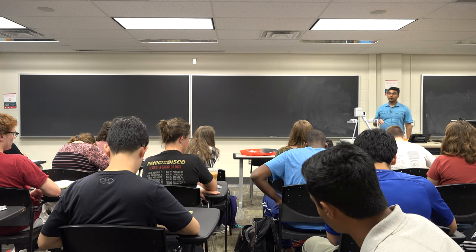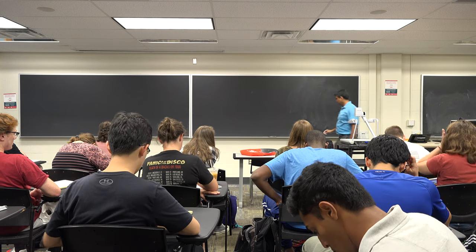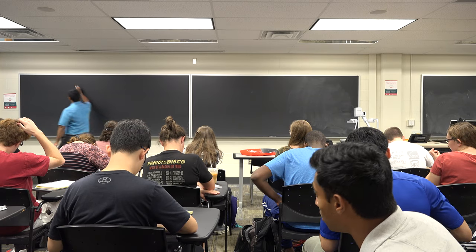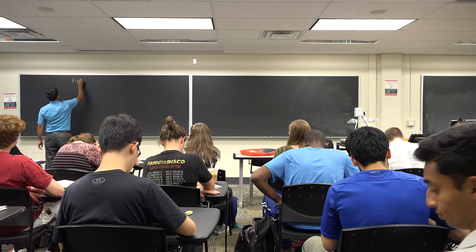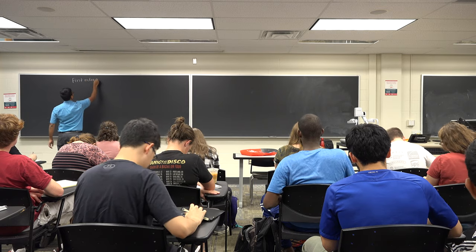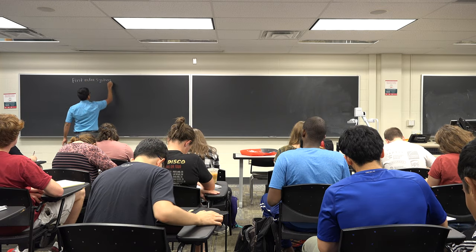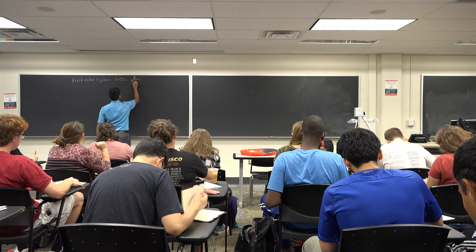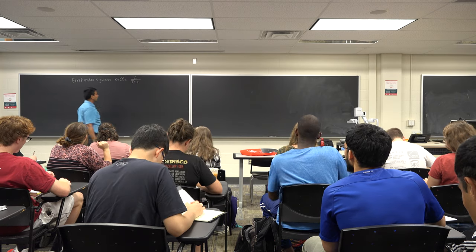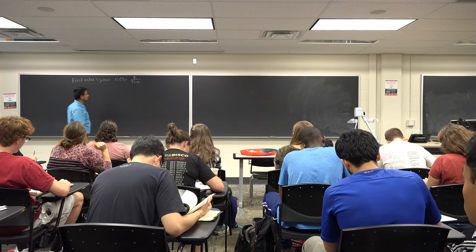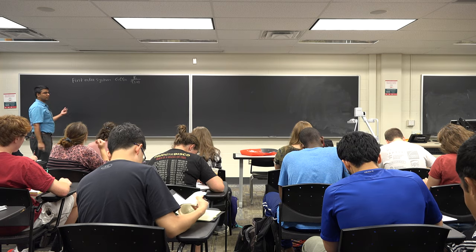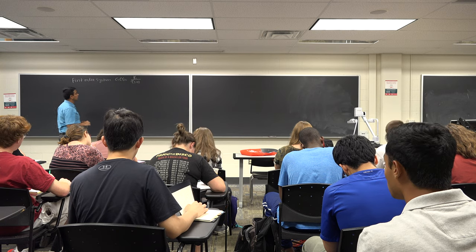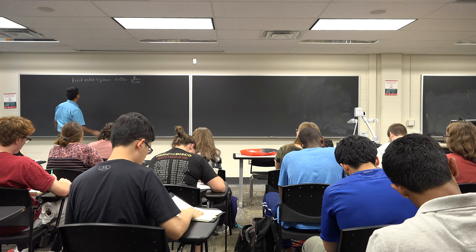Today's class, we are going to talk about second-order systems. First-order systems are of the type where the transfer function is K over (τs + 1). τ is the time constant for the system, and the lower the time constant, the quickly the function will get to the equilibrium point. That's first-order system.